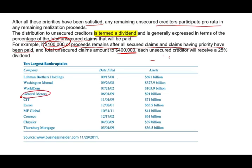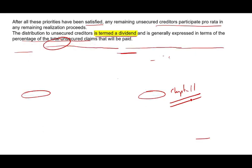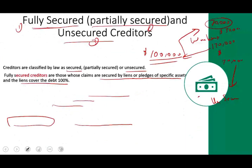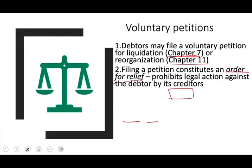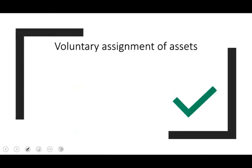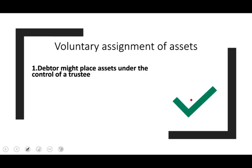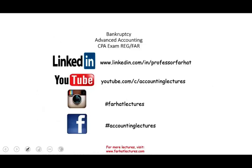For example, GM filed for Chapter 11 reorganization at $91 billion, and GM did get out of it. We're going to cover Chapter 7 and then Chapter 11 in more detail shortly. If you have any questions or comments, please email me. If you visit my website for additional lectures, please consider donating. If you are studying for your CPA exam, by all means study hard — it's worth it. See you on the other side of success.